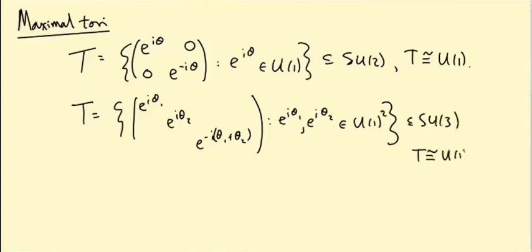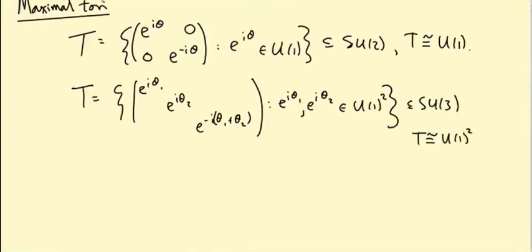So more generally, a torus in a matrix group G is a smooth injective homomorphism.